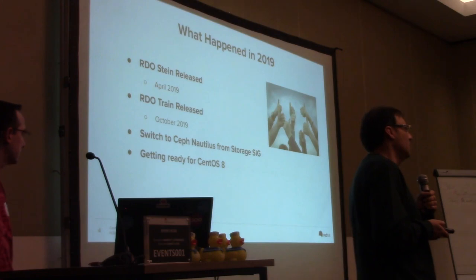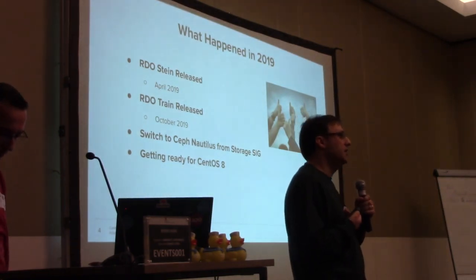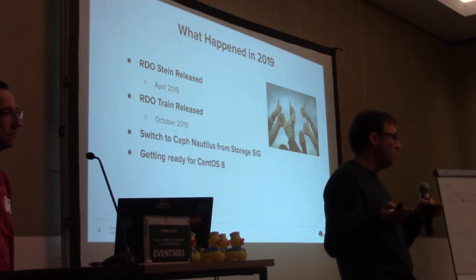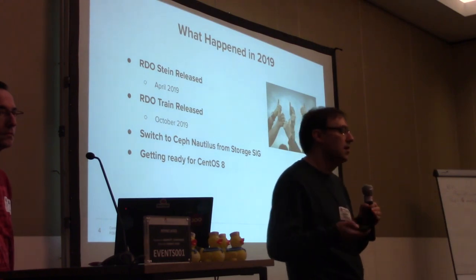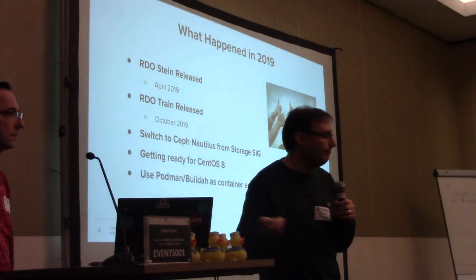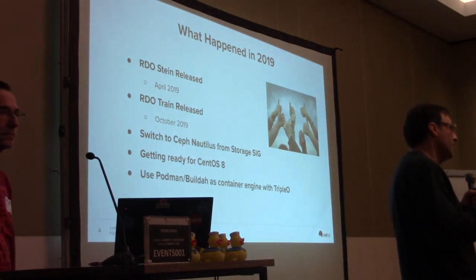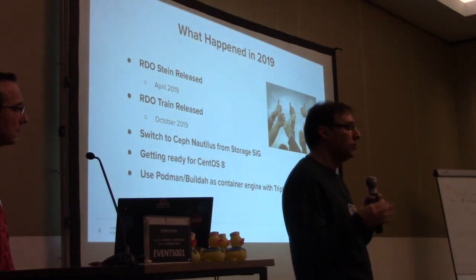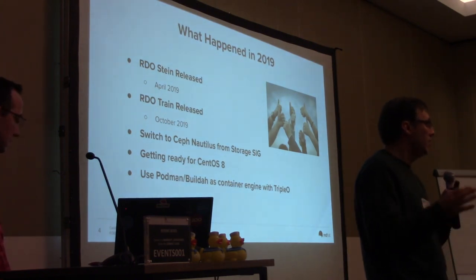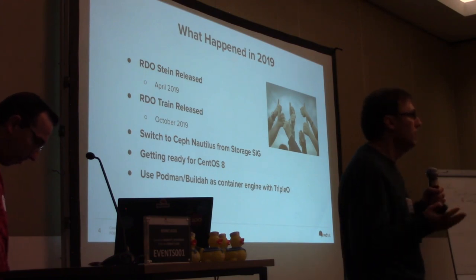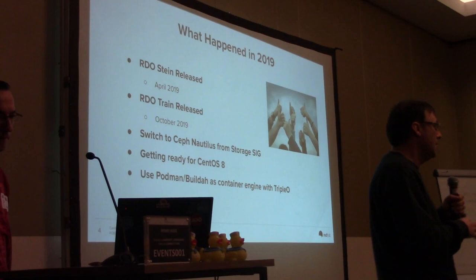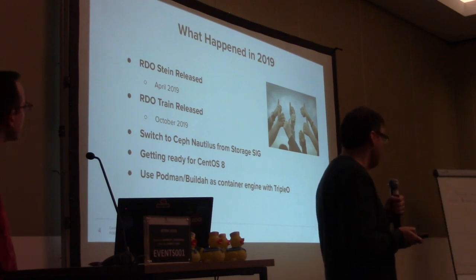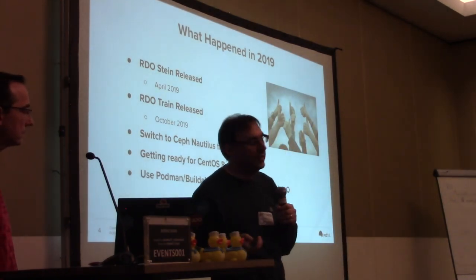We have worked a lot on getting ready for CentOS 8, which is the very big thing in the last year and probably the next months. There are a lot of changes needed, especially because of all the Python changes. OpenStack is a very Python-focused project, and we are moving from Python 2 to Python 3, which is really a big change. As part of this preparation for CentOS 8, we've been working with the virtualization SIG on containers, supporting both Podman and Docker container runtimes on CentOS 7, so we can do a smooth transition between CentOS 7 and 8. We worked quite hard with TripleO and Podman maintainers to make that work.